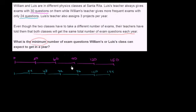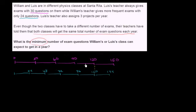The minimum number is the point at which they've gotten the same number of exam questions despite the tests having a different number of items. You can see the point at which they have the same number is at 120. They both can have exactly 120 questions, even though Luis's teacher is giving 30 at a time and William's teacher is giving 24 at a time. So the answer is 120. Luis had 4 exams, while William would have to have 5 exams, but that gets them both to 120 total questions.